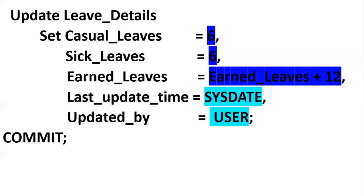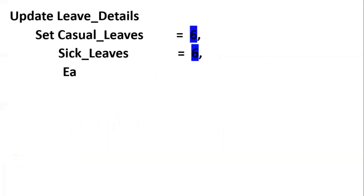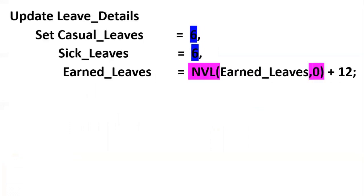There is no WHERE condition because the leave update should be applicable to all employees in the company. An important condition to handle carefully: if earned_leaves is NULL, NULL plus anything gives NULL. This is a bug we need to handle using NVL — NVL(earned_leaves, 0). If earned_leaves is null, we treat it as 0, so 0 plus 12 equals 12. If we don't handle this, null plus 12 will return null because any operation performed with null returns null. That's why we must use NVL.